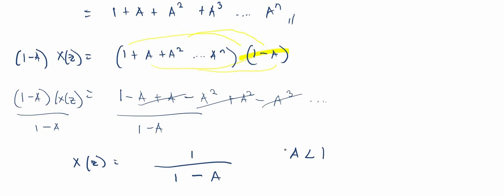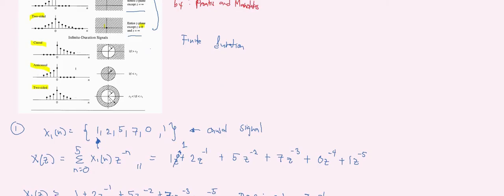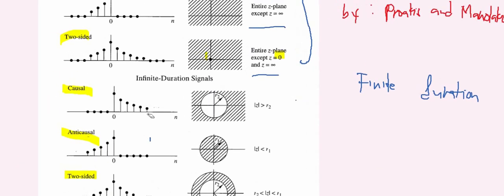We require |a| less than one. This is important because we need this for the region of convergence — an important criterion to ensure the Z-transform is defined. For example, if we let a equal one, we get one over zero, which is undefined. This causal signal constraint was also covered in my previous video.